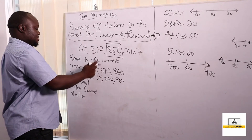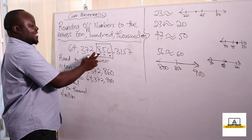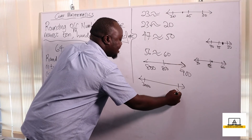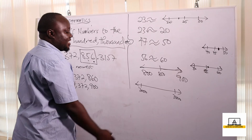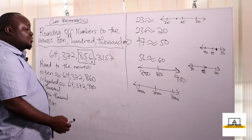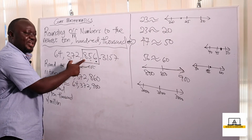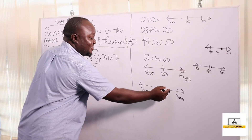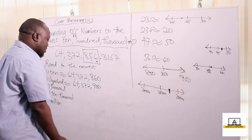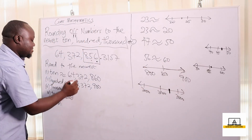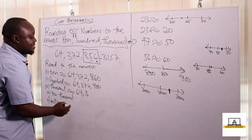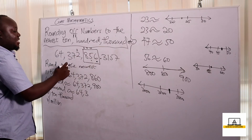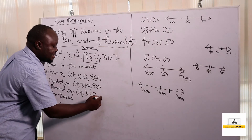Now rounding to the nearest thousand, we look at two thousand eight hundred and fifty-six. To the nearest thousand, we can have two thousand or three thousand. In between two thousand and three thousand is two thousand five hundred. We are talking about two thousand eight hundred and fifty-six, which is above two thousand five hundred and closer to three thousand. So to the nearest thousand, this becomes sixty-four million three hundred and seventy-three thousand.